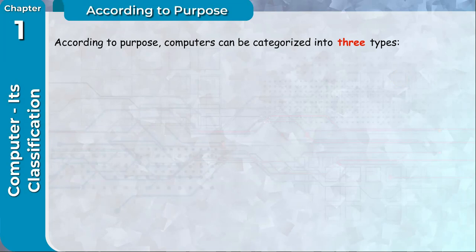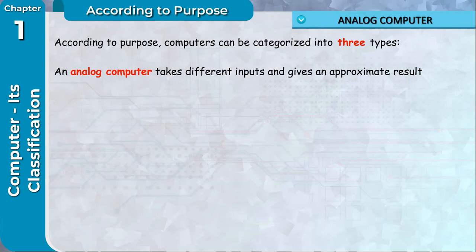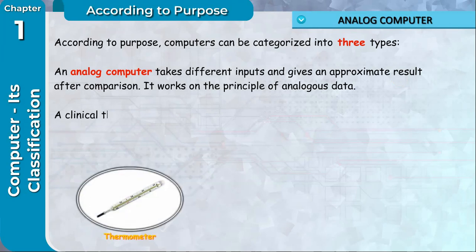According to purpose, computers can be categorized into three types. Analog Computer: An analog computer takes different inputs and gives an approximate result after comparison. It works on the principle of analogous data.